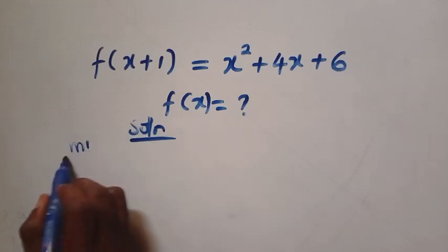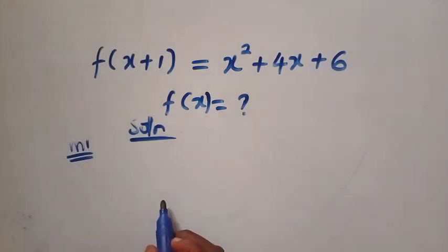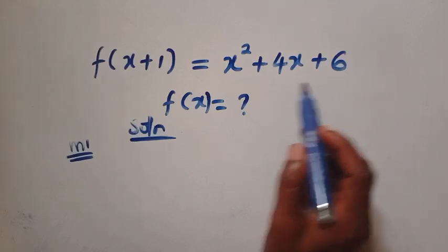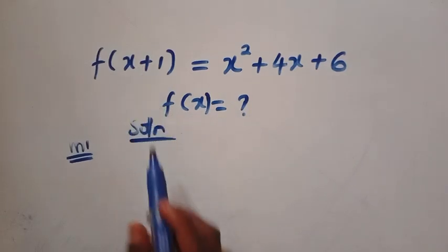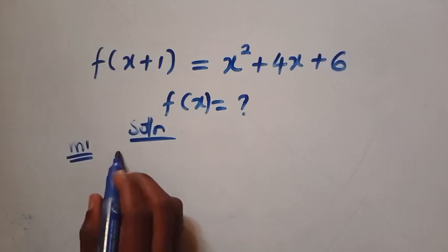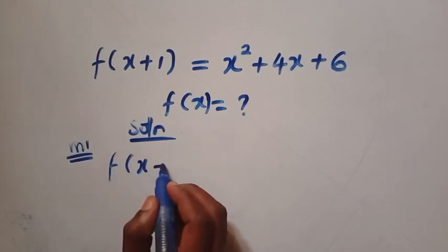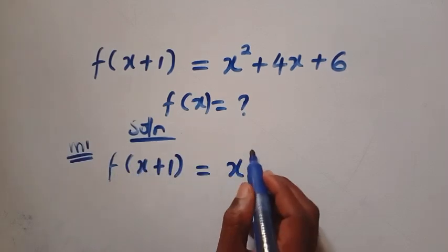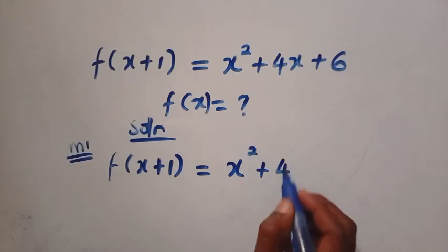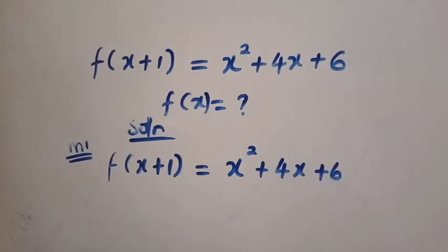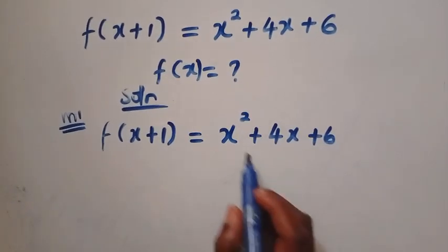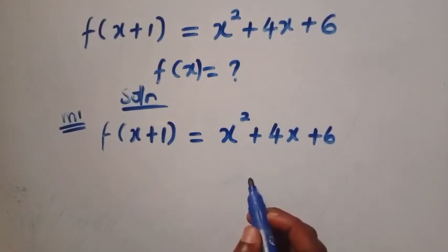Let's consider the first method called manipulation method. I want to try and manipulate all these sides just for it to have x plus 1 as the domain. From here we have f of x plus 1 equals x squared plus 4x plus 6. This is the given question. But can this be factorizable? No. We cannot factorize this.